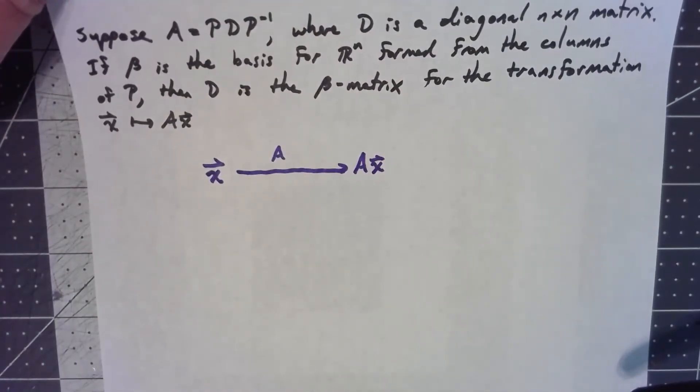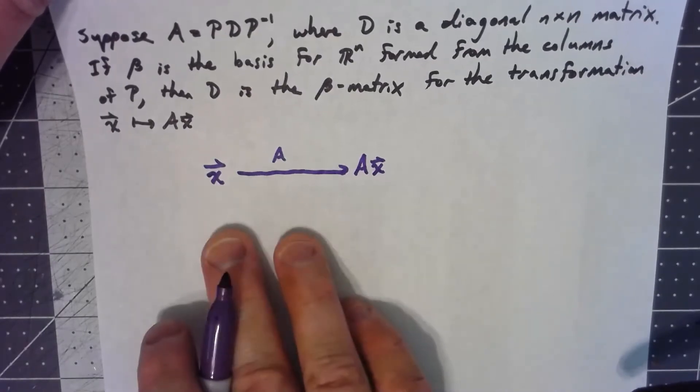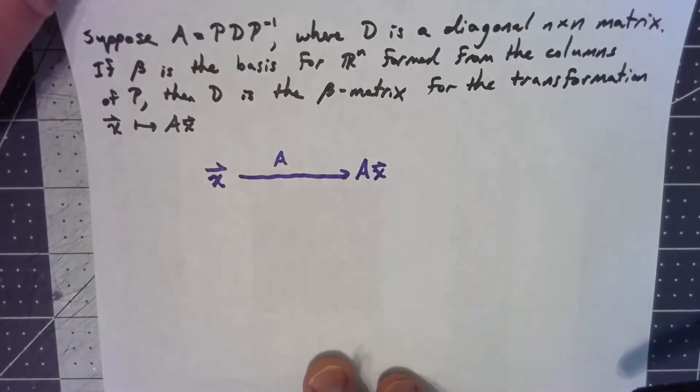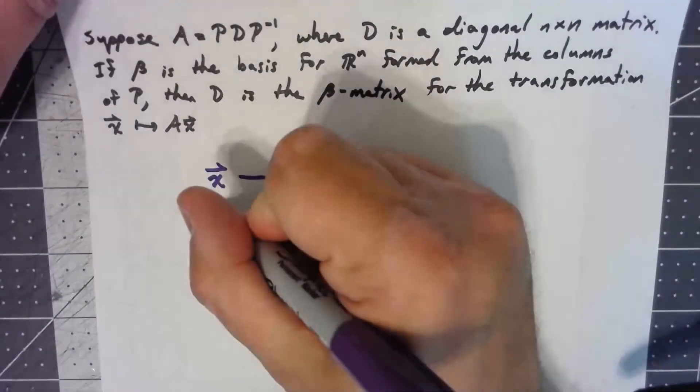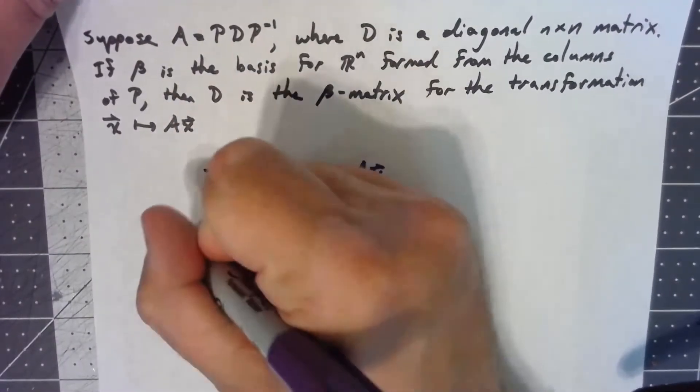But now we can also think about this since A is PDP inverse. I can think about this as doing three multiplications to get there. We're multiplying by P inverse,